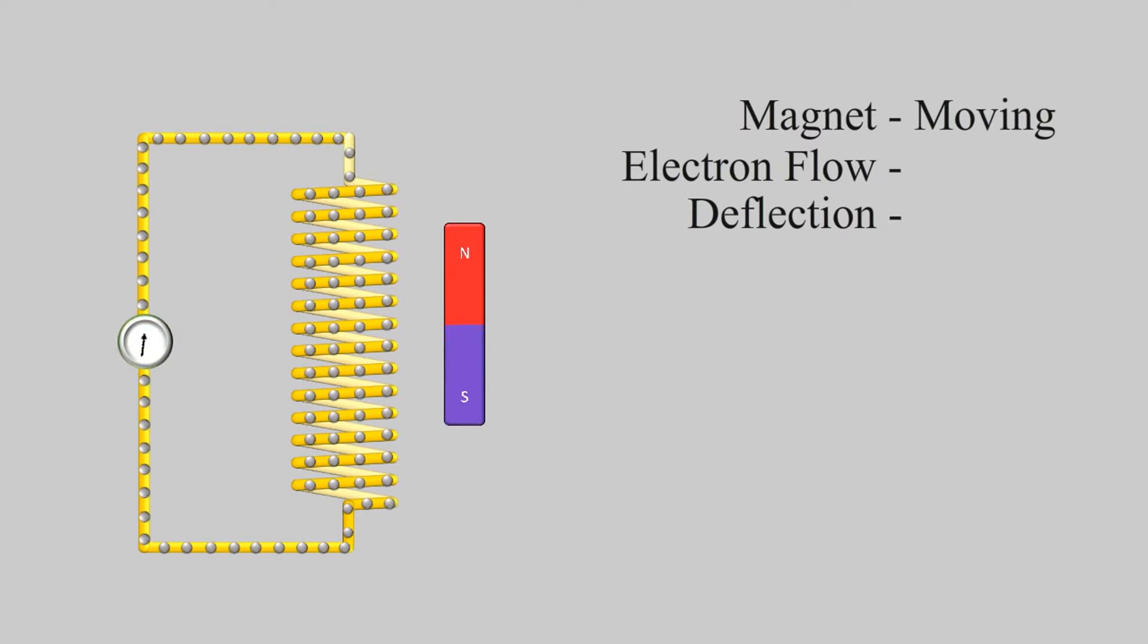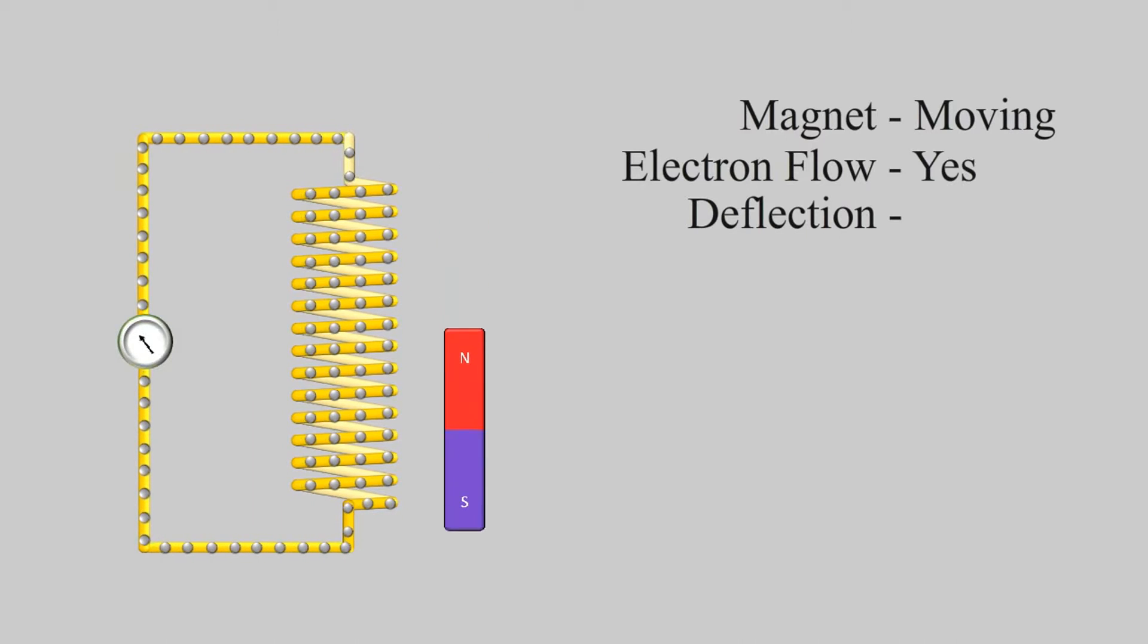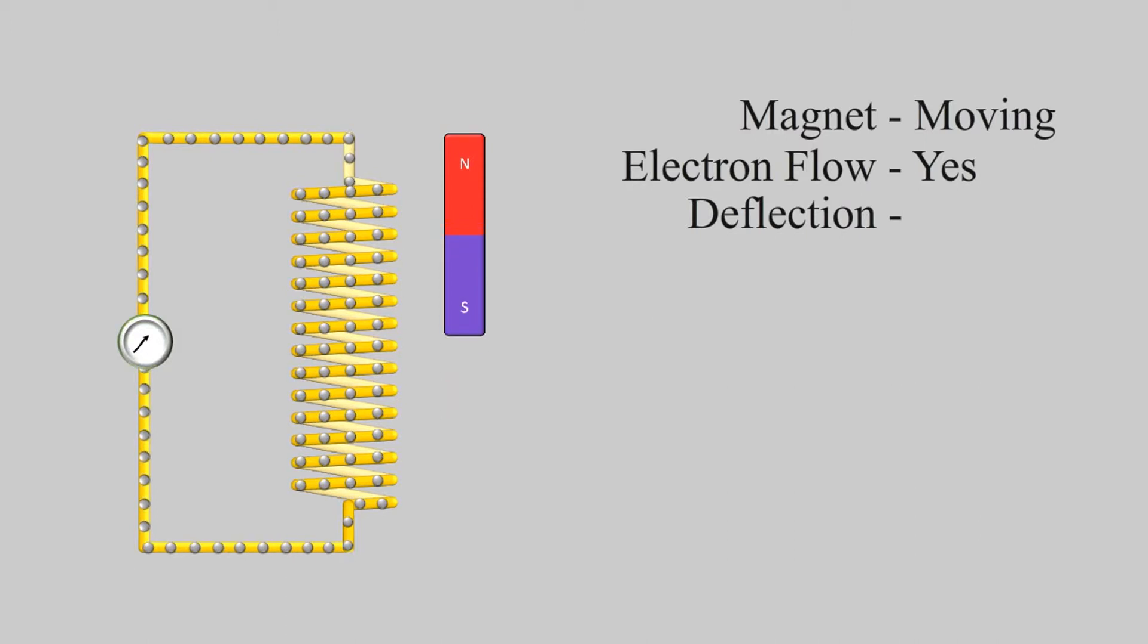But when we move the magnet side by side the electricity is induced in the winding and flows through the circuit and galvanometer shows that output. But what actually happens inside? Let's see.